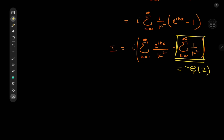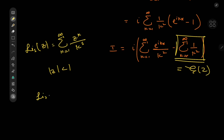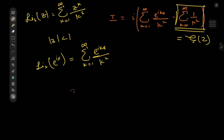For the first sum we need the polylogarithm of order s of a complex number z, which has series expansion: sum over k from 1 to infinity of z^k divided by k^s, for |z| < 1. However, for s a positive integer greater than 1 — specifically the dilogarithm, the polylogarithm of order 2 — with z = e^(ix) having absolute value 1, this equals the sum over k of e^(ikx) / k², which is exactly what we have. So I equals i times Li₂(e^(ix)) minus ζ(2).